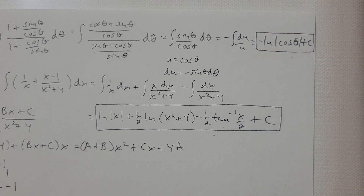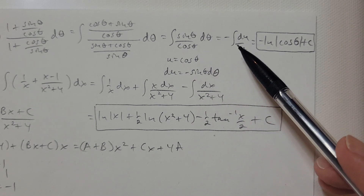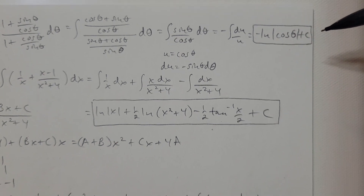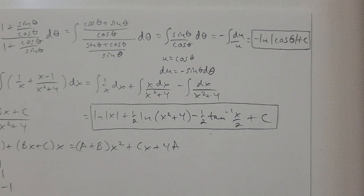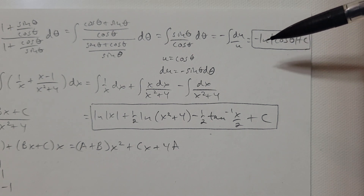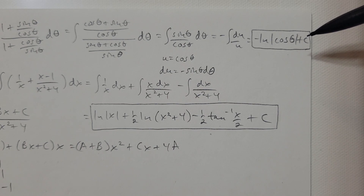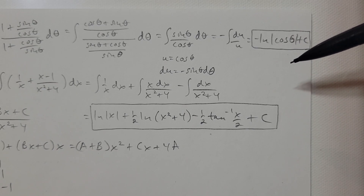When I flip the denominator, (cosine theta plus sine theta) divided by (sine theta plus cosine theta) cancels, leaving sine theta over cosine theta, which is tangent theta. But leaving it in terms of sines and cosines, I can make a u-substitution: let u be cosine theta, so du is negative sine theta d-theta. I have sine theta d-theta on top, so a negative comes out. That gives negative the antiderivative of 1 over u du, which is negative ln of the absolute value of u, and u is cosine theta.